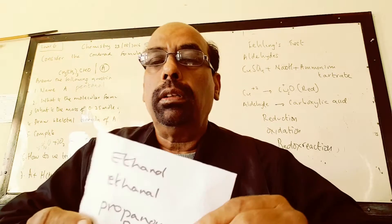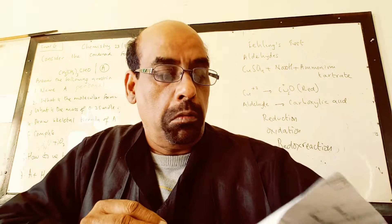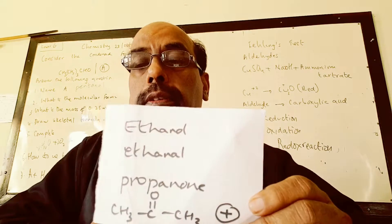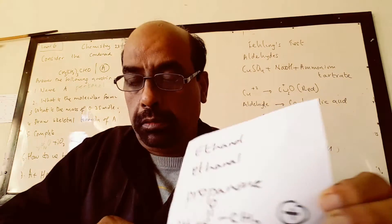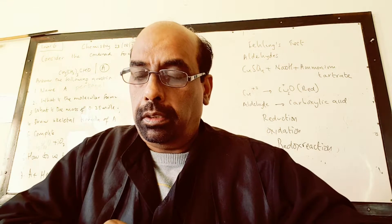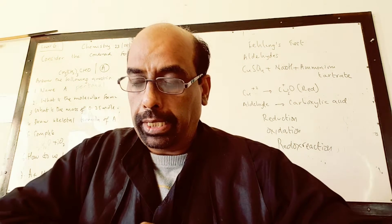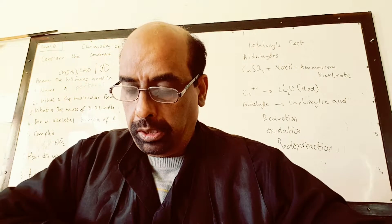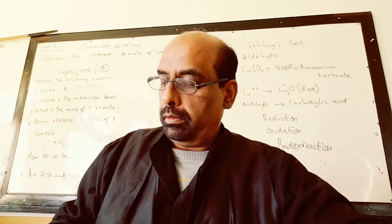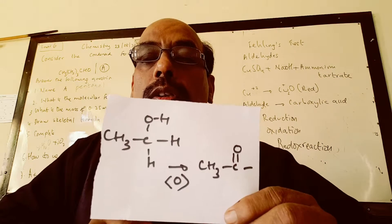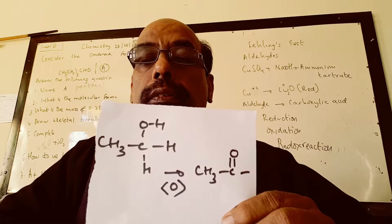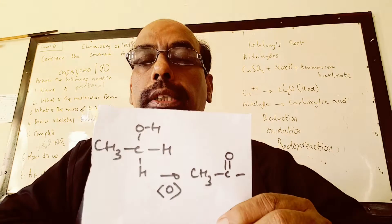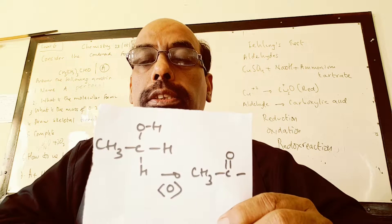Ethanol, propanone — all these compounds give a positive tri-iodomethane reaction. A compound such as ethanol contains the CH3CHOH group, which is oxidized by the iodine to the CH3CO group.